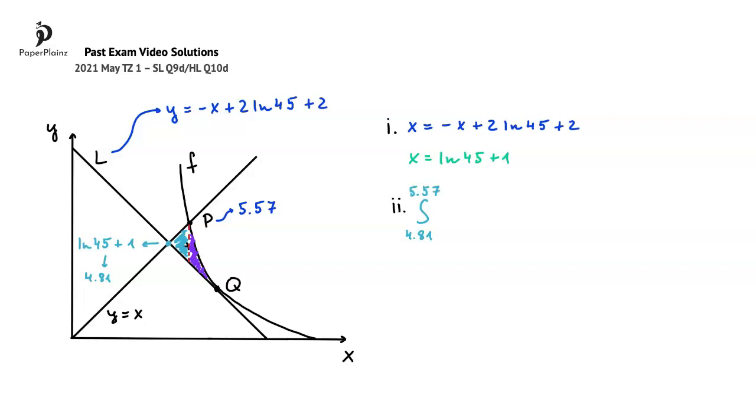The area that we are looking for is bounded by two graphs. The upper bound of the area is the line y equals x, and the lower bound is the line L. To complete our definite integral, we'll subtract the lower bound from the upper bound, so we'll write x, the upper bound, minus the lower bound, so the equation of L, which is negative x plus 2 ln 45 plus 2. We'll write the dx at the end to complete our integral.